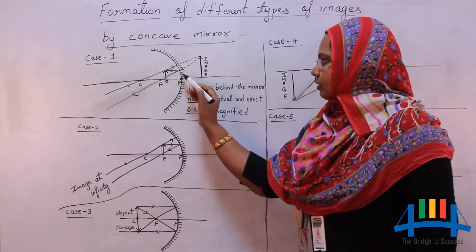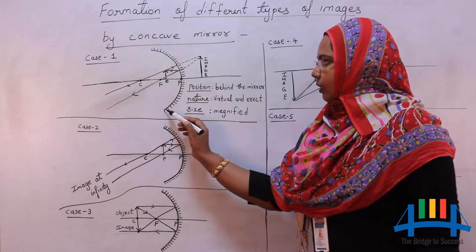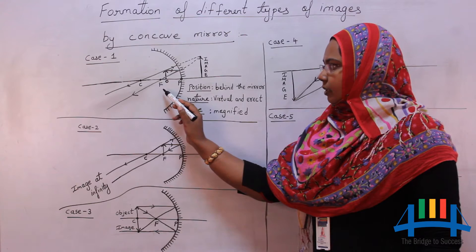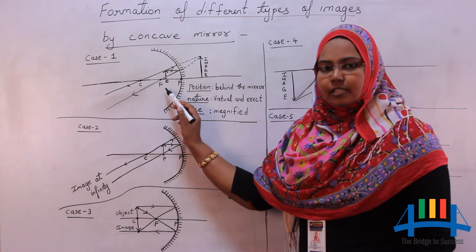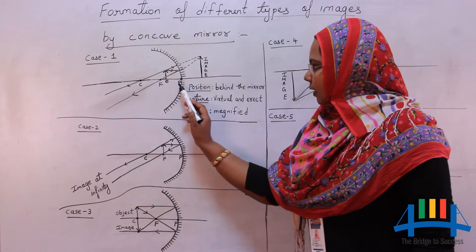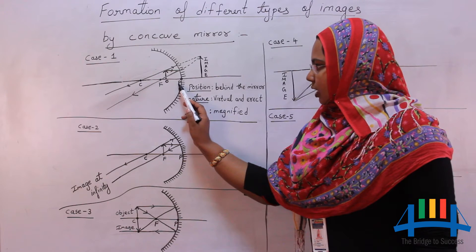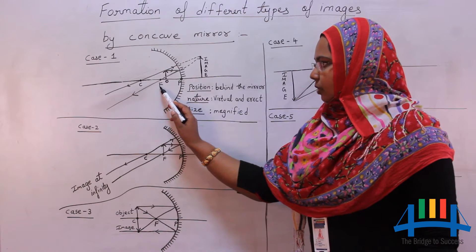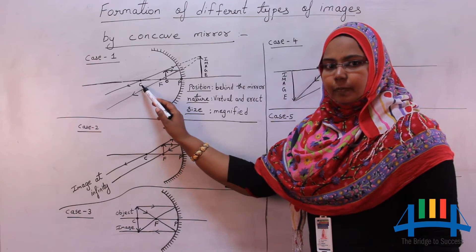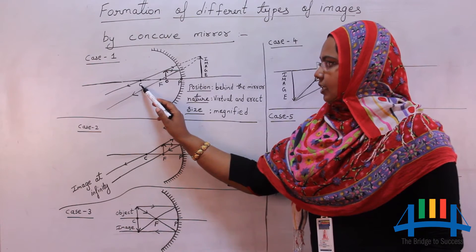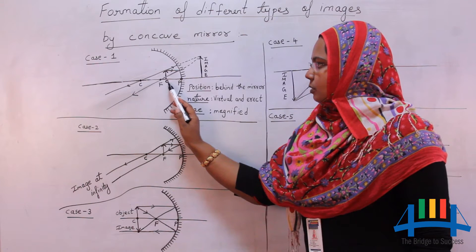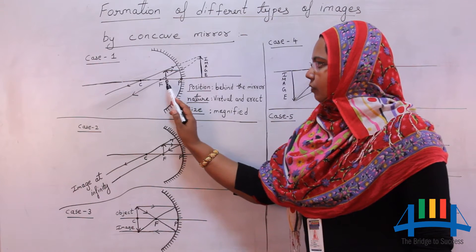This is the concave mirror. In front of the concave mirror, we can place the object at six different positions. P is called the pole, F is the focus, and C is the center of curvature. In the first case, our object is placed between pole and focus.